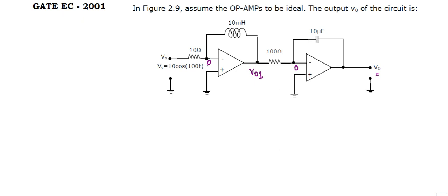Writing the KCL equation at this node, let this node be A. Writing the KCL equation at node A we can get as 0 minus Vs upon 10 plus 0 minus V0,1 upon, here it is an inductor, so we can write as L into S, that is value of L is 10 mH into S.